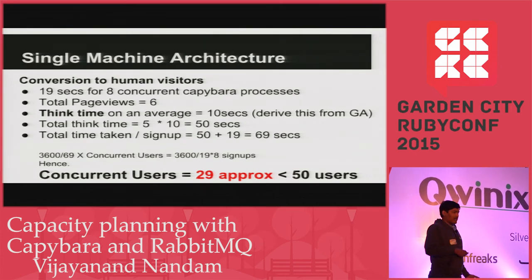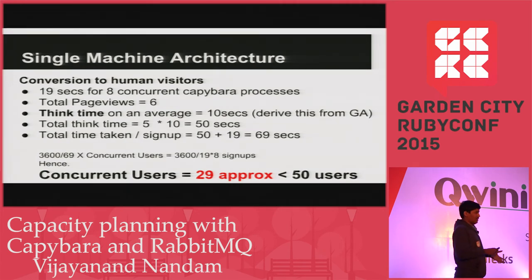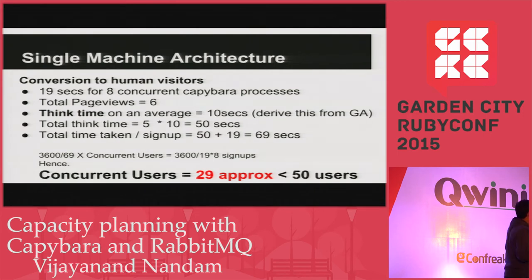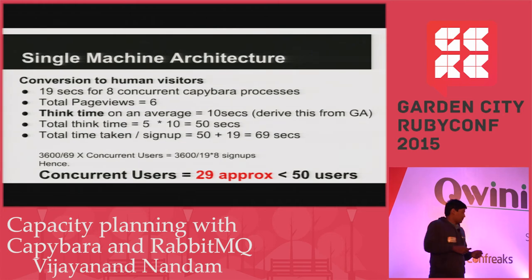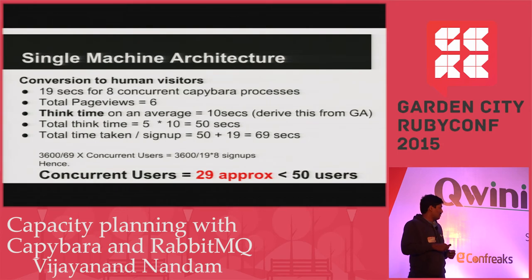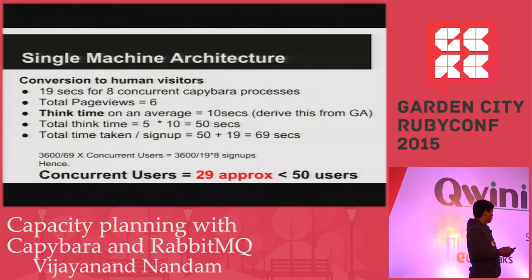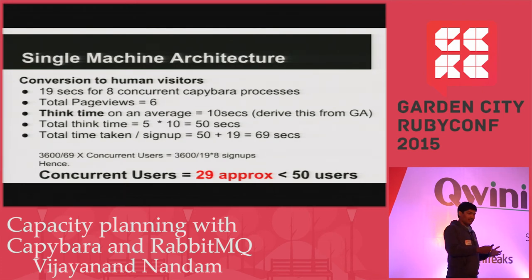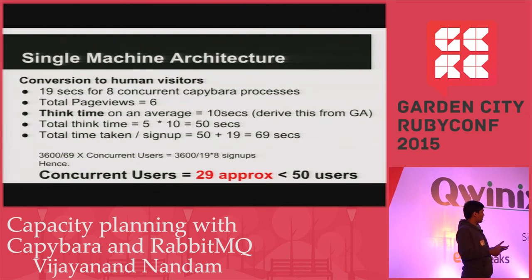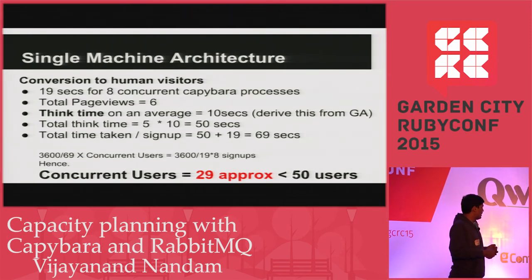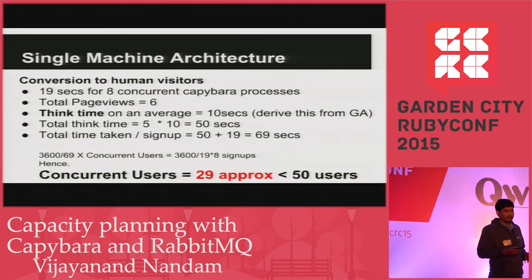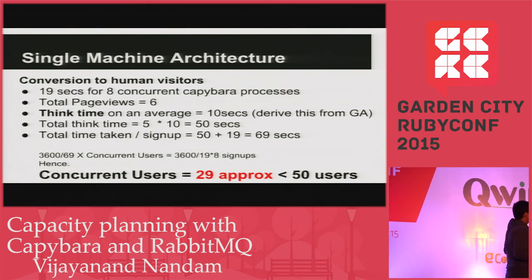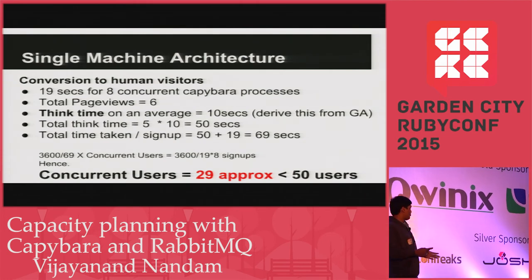For calculations of optimum user experience, the maximum concurrent Capybara processes this architecture can support is eight. The entire sign-up process has around six page views. Between performing two actions on the website, there is something called think time — the user is reading content or thinking about what to fill in a form field. On average, think time between two actions is around 10 seconds. With five think times across six page views, that's 50 seconds, making the total time for a human visitor to complete sign-up around 69 seconds.